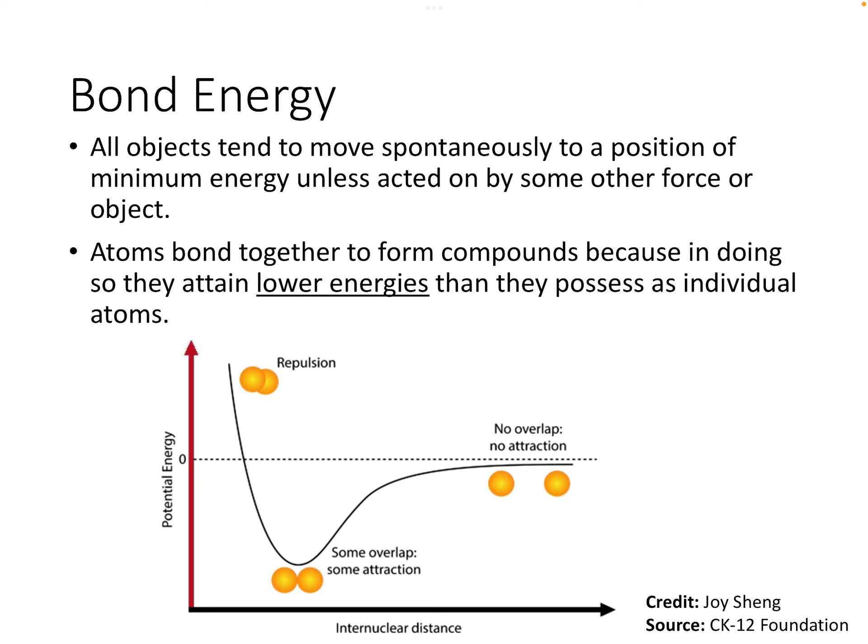Let's start by talking about bond energy. All objects typically move spontaneously into a position that has minimum energy — like sitting on a couch, moving to a position of minimum energy unless forced otherwise. That's the same with atoms and bonds: they want to be in a position of minimum energy. Atoms bond together to form compounds because that allows them to attain lower energies than when they're individual atoms.